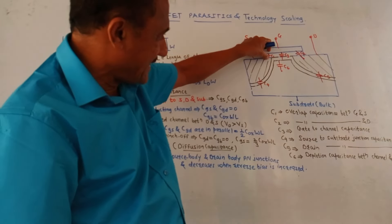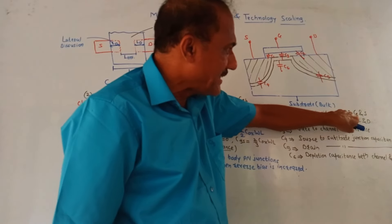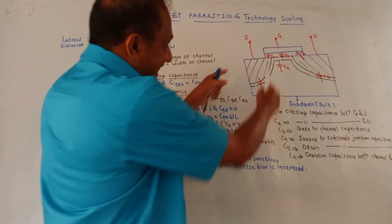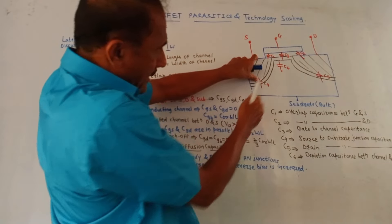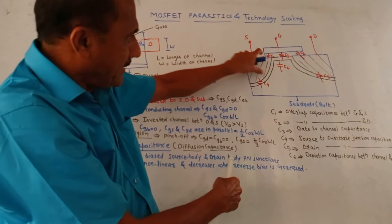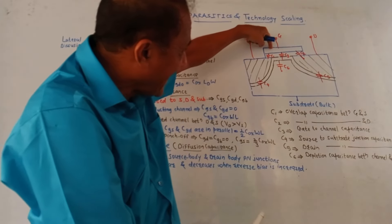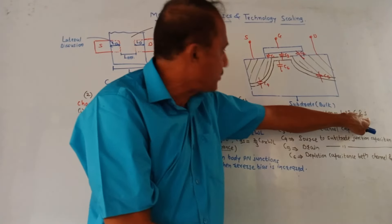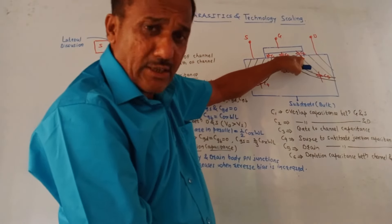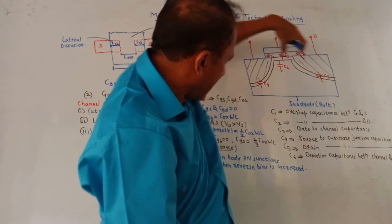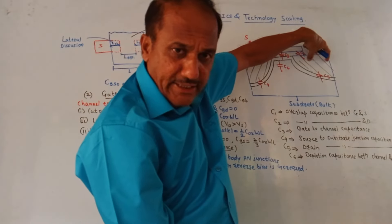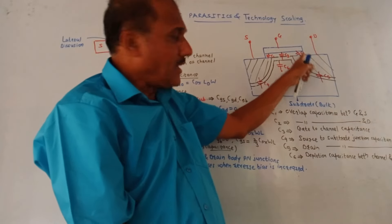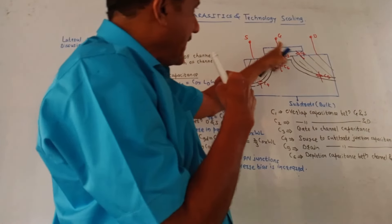First is C1 — it is the overlap capacitance between gate and source terminal. This portion is related to source and this is the gate terminal, so between gate and source, C1 capacitor is created. C2 is the overlap capacitor which is created between gate and drain terminal. Just like the source terminal, this portion is related to the drain terminal, so C2 is the overlap capacitor between gate and drain.